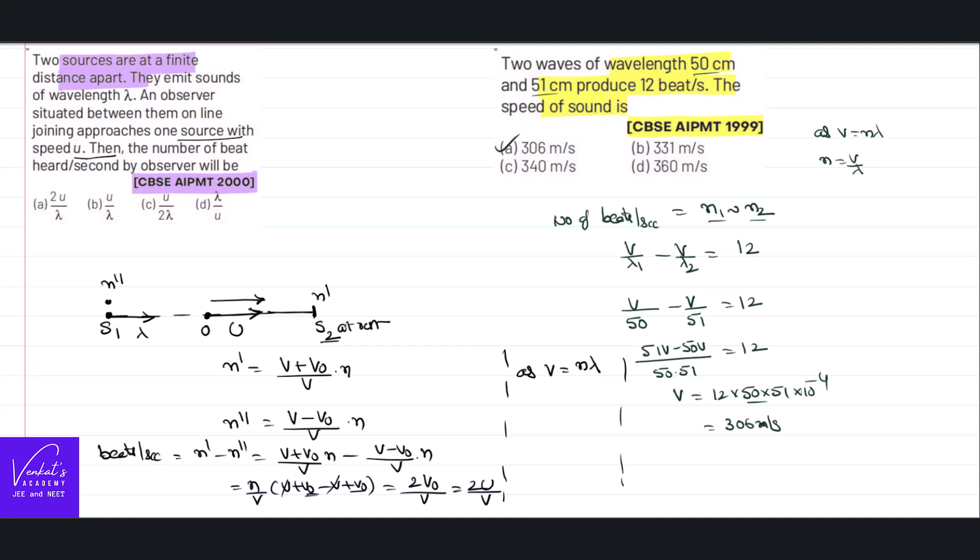2v₀ by v multiplied by v, multiplied by n. By v is there, I have forgotten that. Multiply by v, I have written, so multiplied by n. I have to write v₀ and v₀ is 2v₀ by v. I have written, I have missed v n, that's why I am writing that n as a multiplication factor.